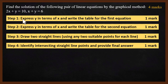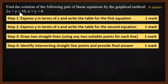Step 1: Express y in terms of x and write the table for the first equation. The first equation is 2x plus y equals 10. So we have to express y in terms of x — that is, y equals 10 minus 2x. Then we use different values of x and write a table. That is one mark.